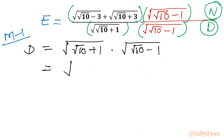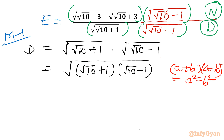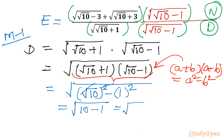Now we have square roots in both terms, so I will club them all together and write square root of (√10 plus 1) times (√10 minus 1). We can use the algebraic identity: (a + b)(a − b) = a² − b². Applying that here, it becomes square root of (√10 squared minus 1 squared), and square and square root cancel, giving square root of (10 minus 1), which equals square root of 9.